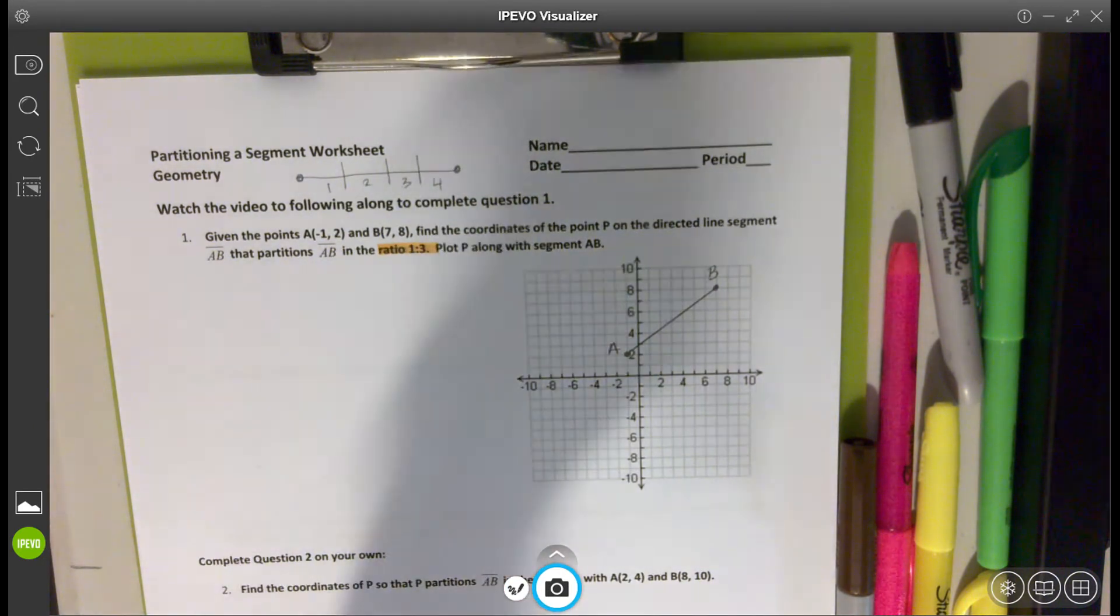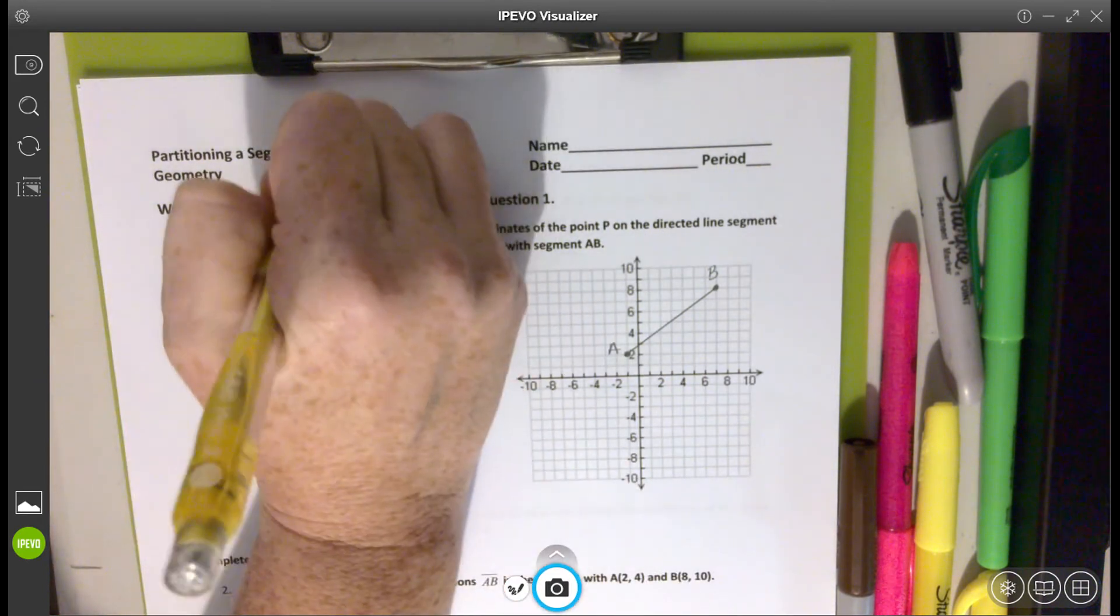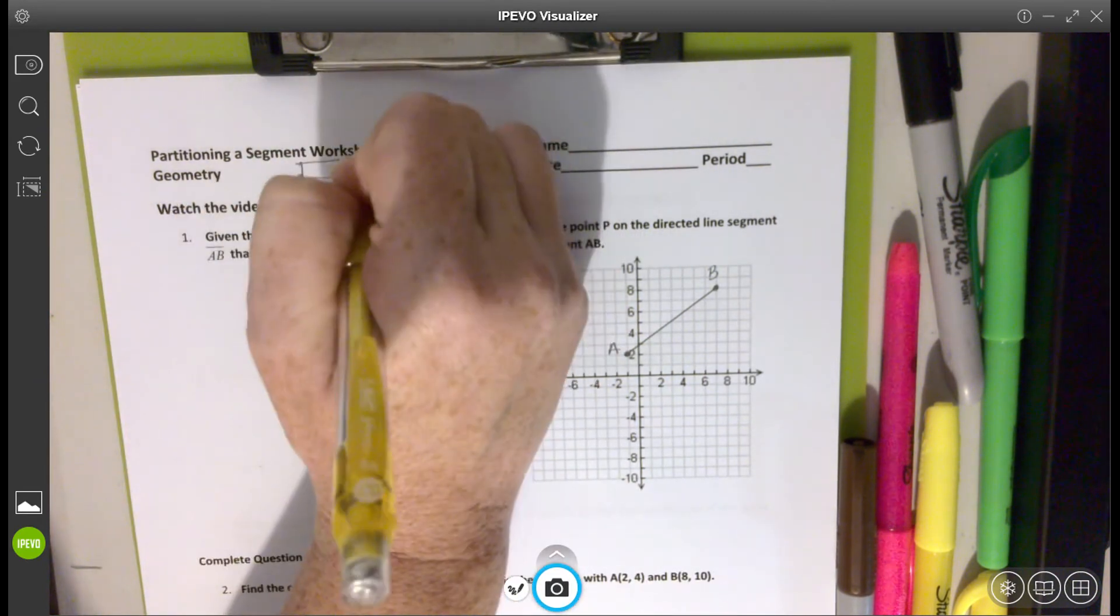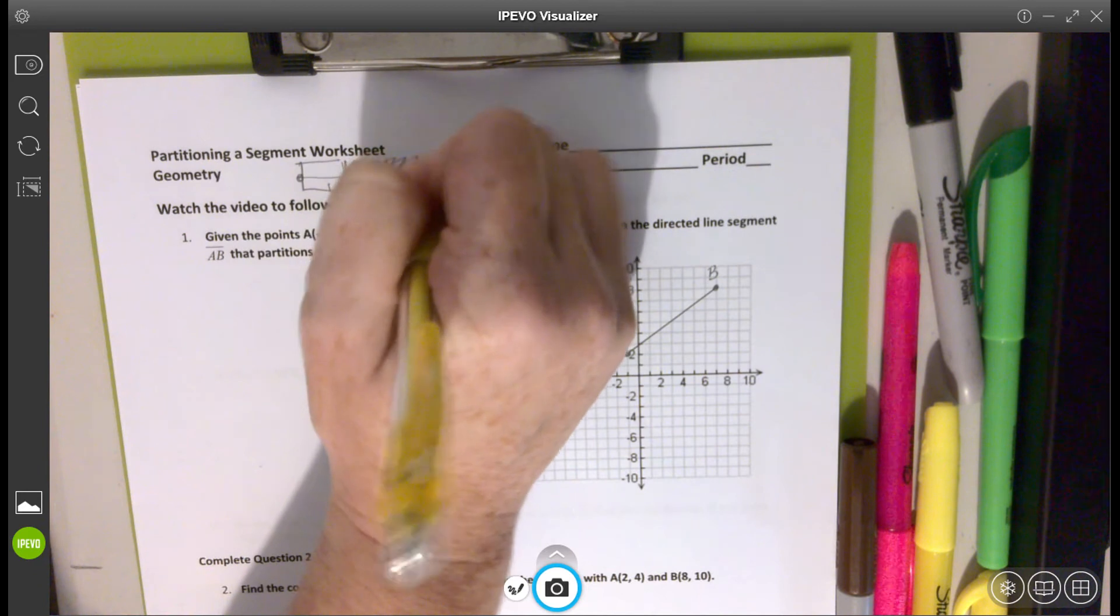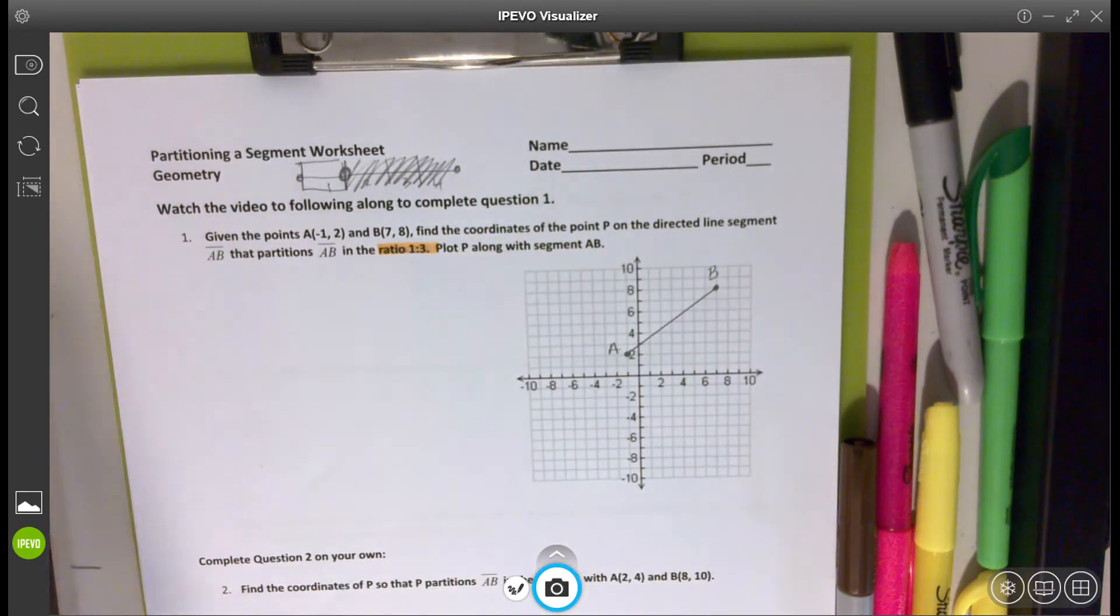And we want to be able to have a ratio of one to three. So here is one piece by itself, and then the three to the other side. We need to find that point P of where that's going to land on that line.